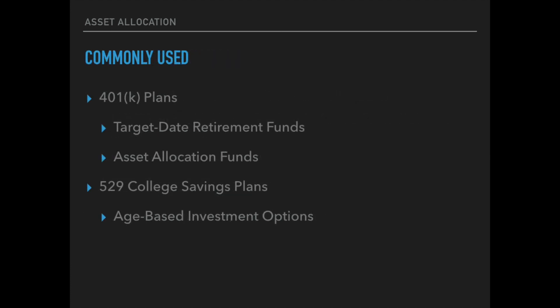Strategic asset allocation is an investment strategy commonly used in both 401k plans and 529 college savings plans — you might be taking advantage of this strategy right now without even knowing it. 401k plans that offer target-date retirement funds and asset allocation funds often use strategic asset allocation. And 529 college savings plans that offer age-based investment options also often use strategic asset allocation.